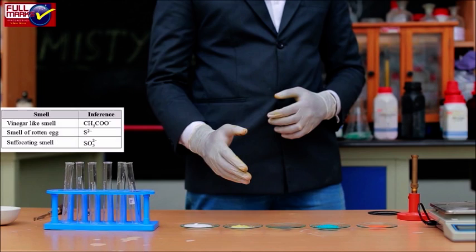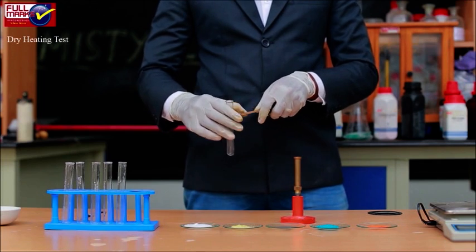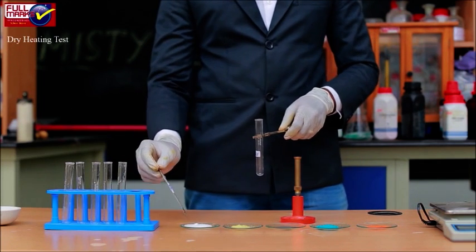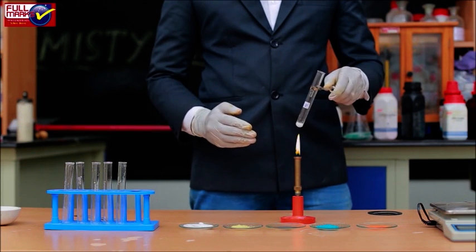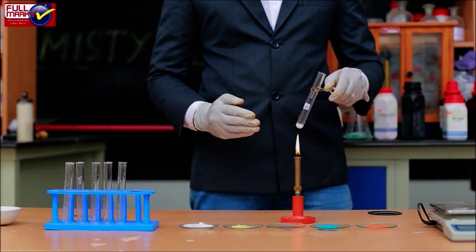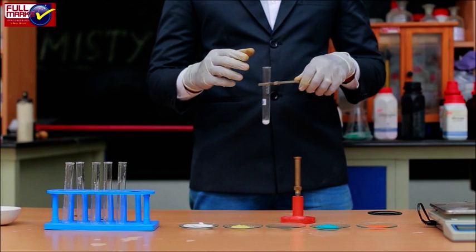Dry heating test: A small amount of salt is taken in a dry test tube. The test tube is heated gently and then strongly. Important information can be obtained by conducting the dry heating test. Colorless or odorless gas indicates CO₃²⁻ (carbonate). Colorless gas with smell of rotten eggs indicates S²⁻ (sulfide).